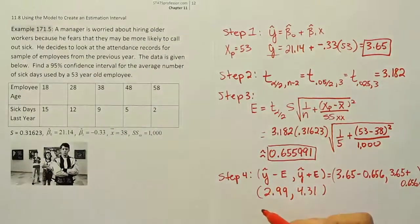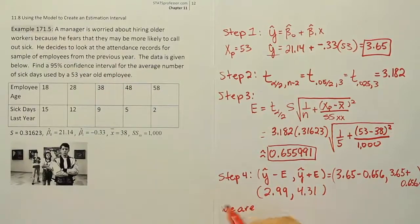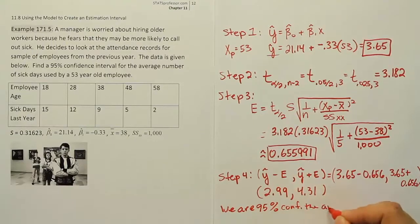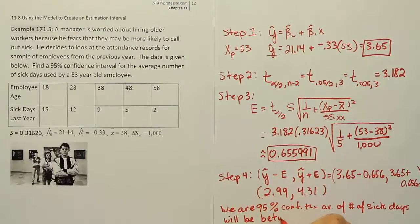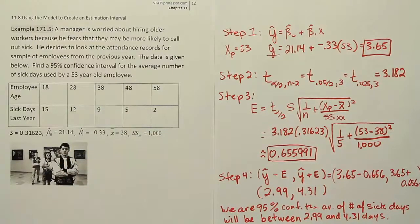What do we say about this interval? This is a confidence interval for the average number of days. We are 95% confident the average number of sick days will be between 2.99 and 4.31 days. That's the average number of sick days taken by a 53-year-old employee. If you have a bunch of 53-year-old employees, the average sick time, number of sick days taken by these employees, is basically somewhere between 3 and 4 days. Essentially we're talking about not a very large number of sick days per year.